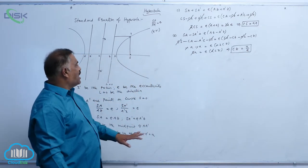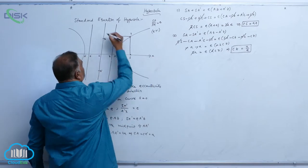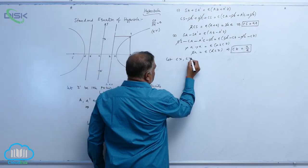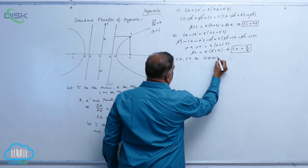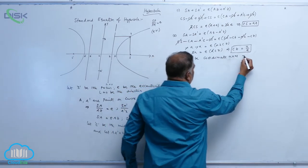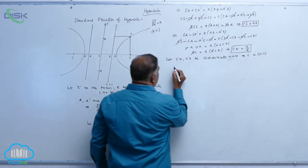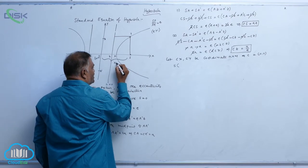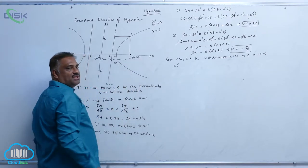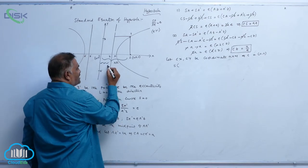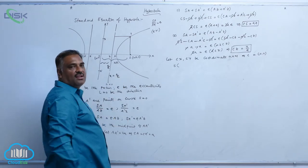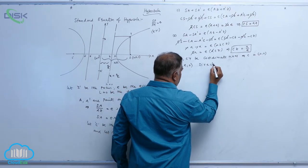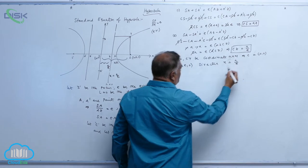Now, taking CX and CY as coordinate axes, we automatically get C equal to (0, 0). Since CS equals AE, S is at (AE, 0). Since CZ equals A by E, the directrix is the line X equal to A by E.